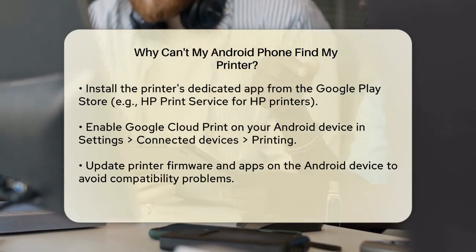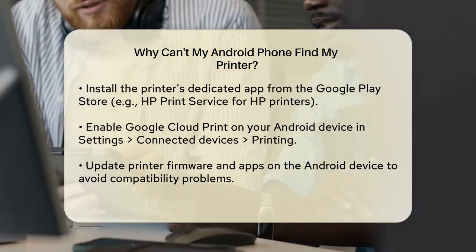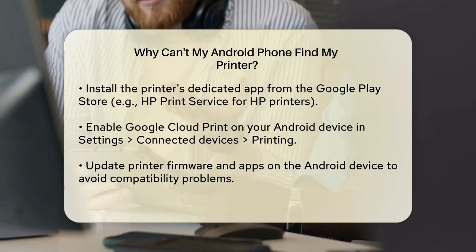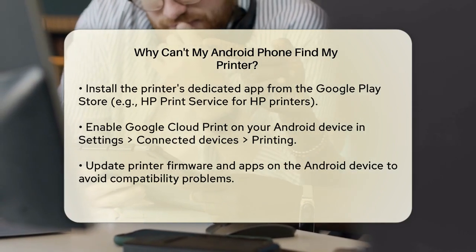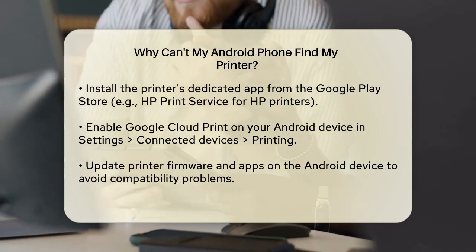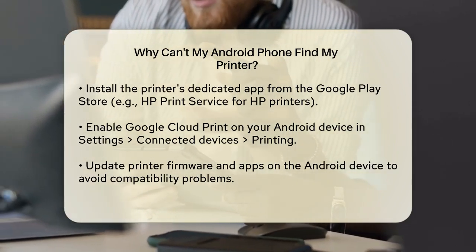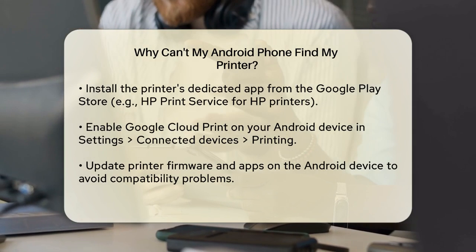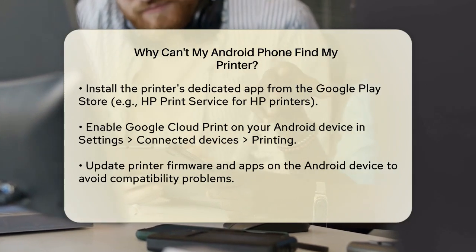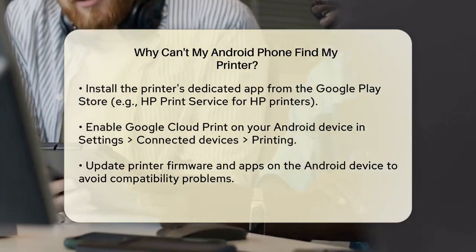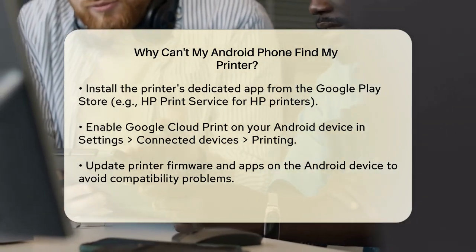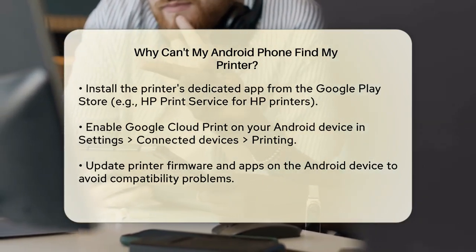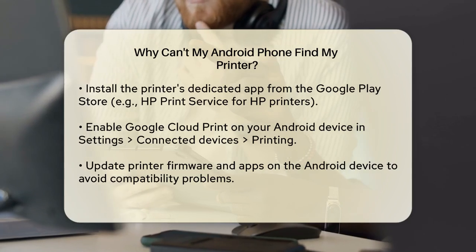Install the dedicated app for your printer brand from the Google Play Store. For example, if you have an HP printer, you will need the HP Print Service app. This app helps establish a connection and provides printing options.